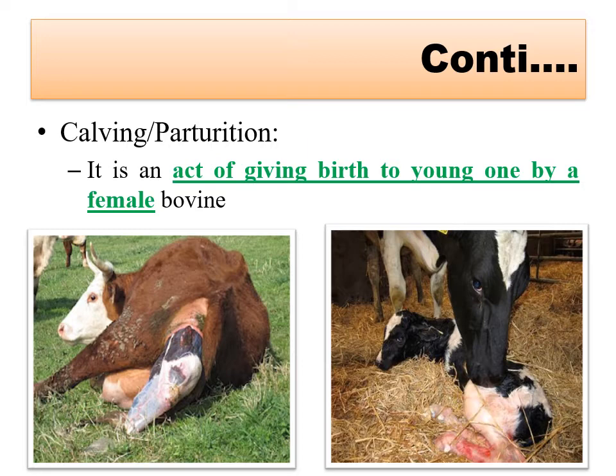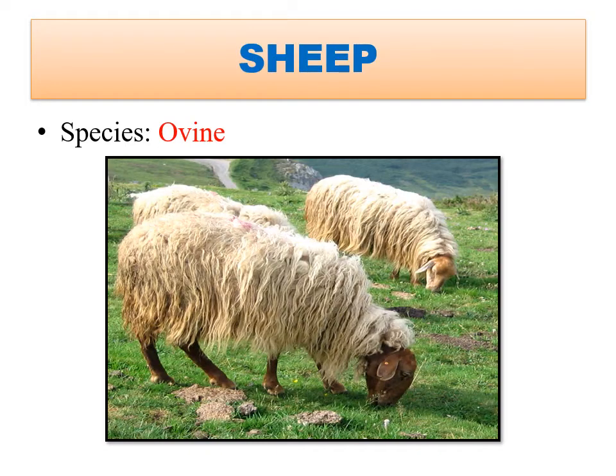Now we will see sheep and goat. The definitions will be almost similar - only the names will be different. The sheep species is ovine, with genus name Ovis aries.